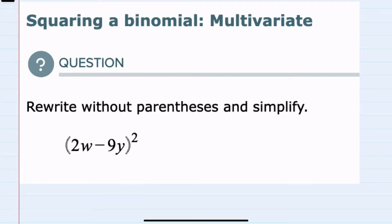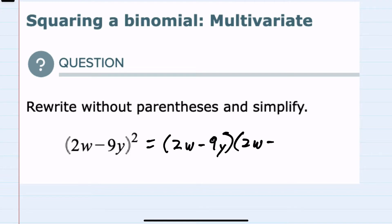In this video, I'll be helping you with the Alex problem type called squaring a binomial multivariate. We're asked to rewrite this expression without parentheses and to simplify. To rewrite it without parentheses, we should recall that squaring implies that we are taking what's being squared — here the 2w minus 9y — and multiplying it with itself. So 2w minus 9y times 2w minus 9y.